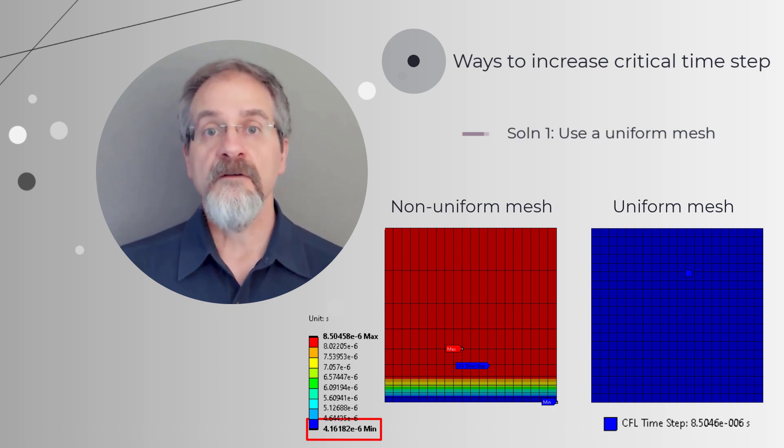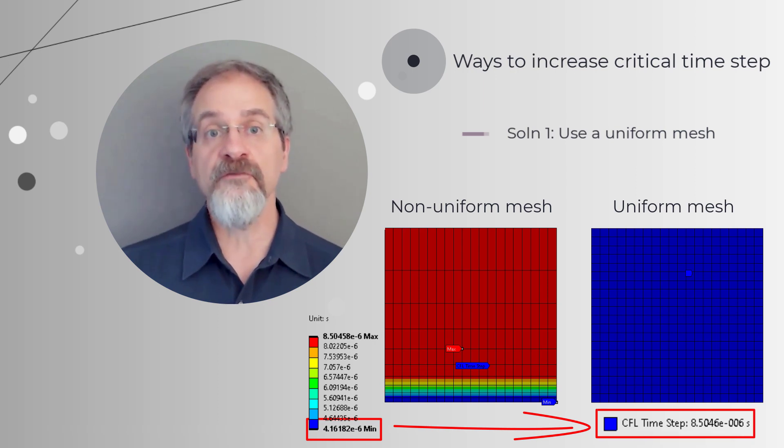In our example, remeshing the plate uniformly tends to increase the CFL time step for the overall model.